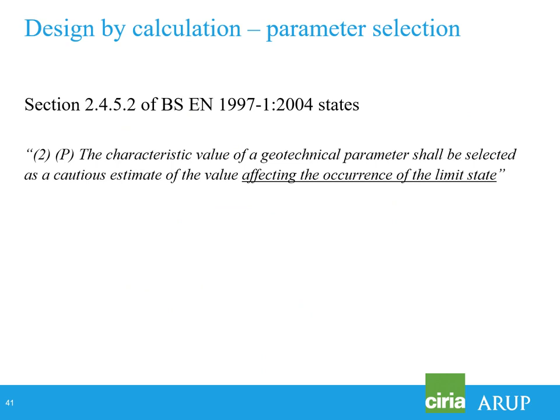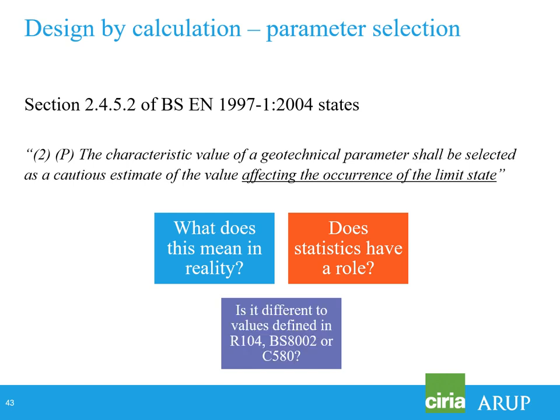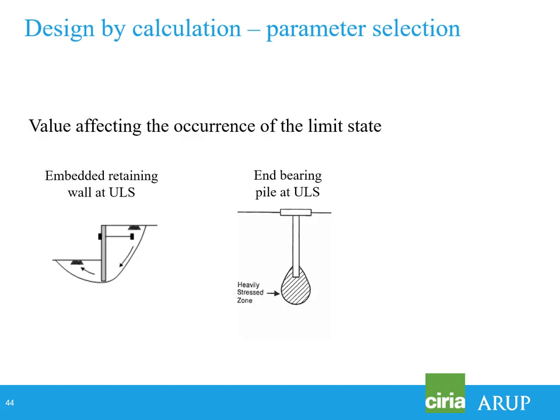Clause 2.4.5.2 states: 'The characteristic value of a geotechnical parameter shall be selected as a cautious estimate of the value affecting the occurrence of the limit state.' What does 'affecting the occurrence of the limit state' mean? And does statistics have a role? People thought they had to do statistics on their parameters to get characteristic values. Is it any different to the values used in R104, BS8002, or C580?